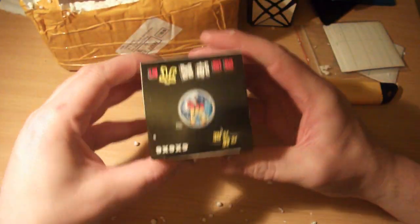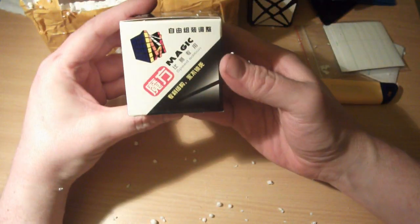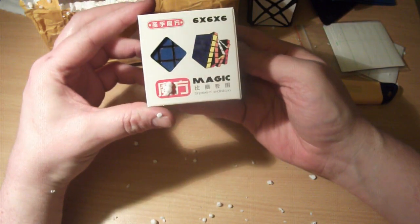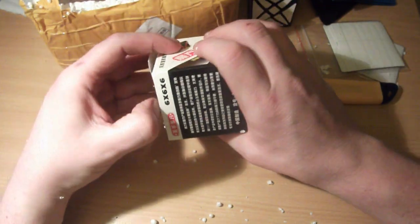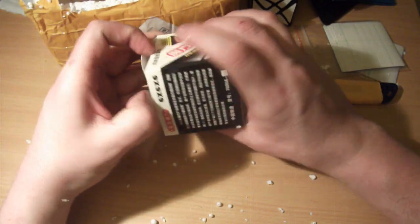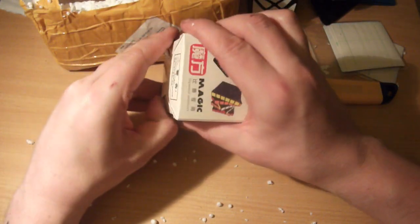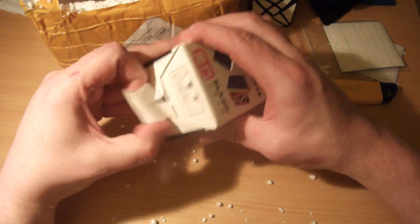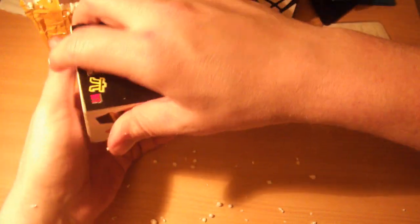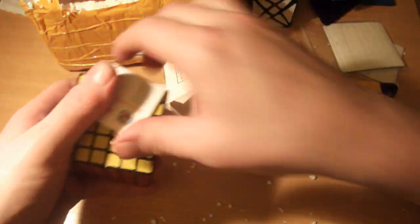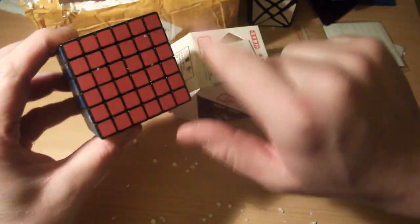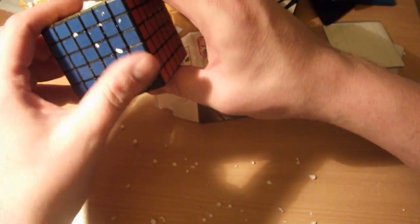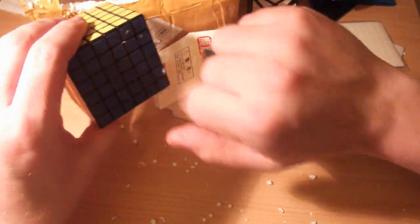Here's the first one out of the box. This is a Shengxiao 6x6—this is the highest order cube I've got so far. From what I understand, the turning quality and stability of these isn't great, but at least it is already stickered, though covered in fluff from this polystyrene, which is a bit annoying.